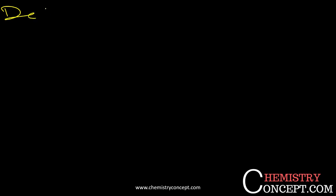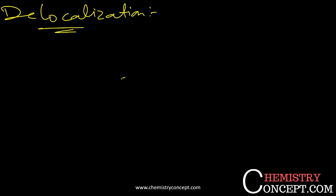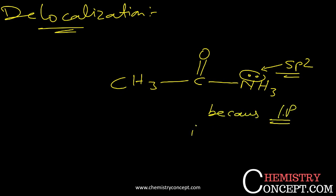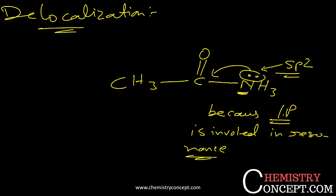Now we'll discuss about delocalization. In delocalization, suppose we have a similar kind of molecule — I'll take an amide here. We have one lone pair here, and in this case this is sp2 hybridized because this lone pair is not available on nitrogen; it is delocalizing, and that's why this nitrogen is sp2 hybridized.